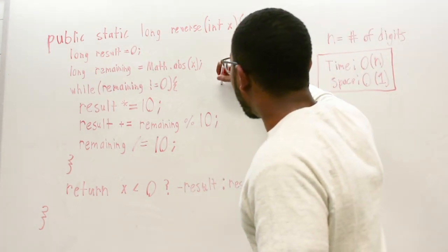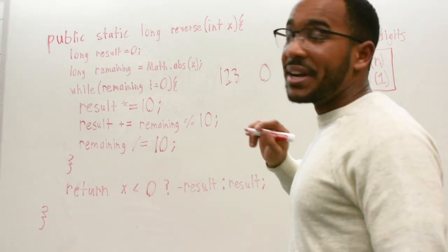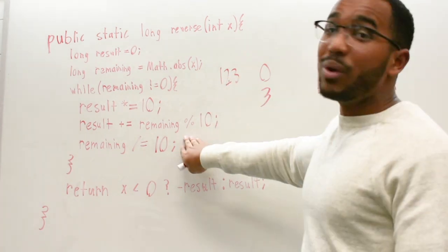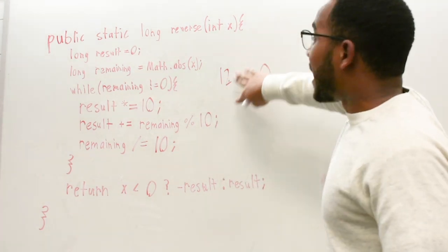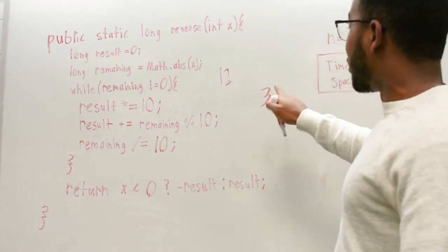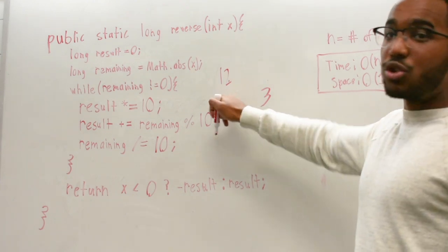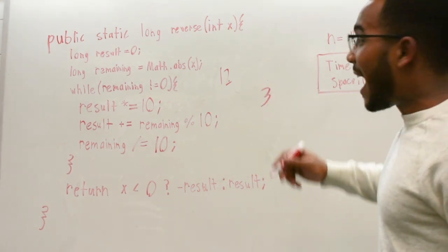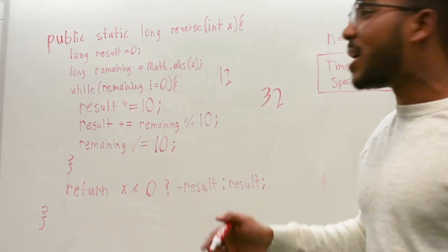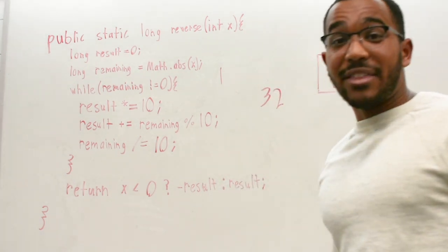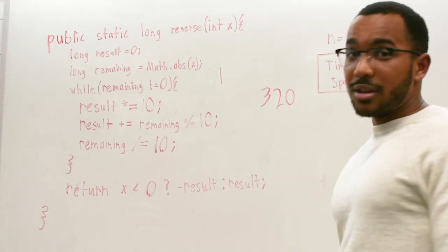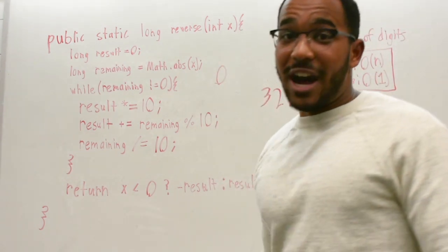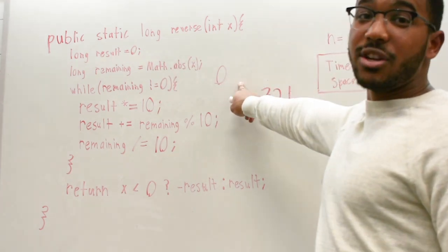So now the result is going to have, so we go one, two, three, and our result was zero. Now the result is going to have three. And we need to get rid of what we just processed here. So we divide by 10 to get rid of that three. And so now our result is three and our remaining is 12. And let's do that again. So we scoot it over, add a zero, multiply by 10, extract the ones place from the remaining, and then remove that from the remaining. And let's do that one more time. Put a zero there, extract the ones place, divide by 10. And now our remaining is zero. So we're finished.